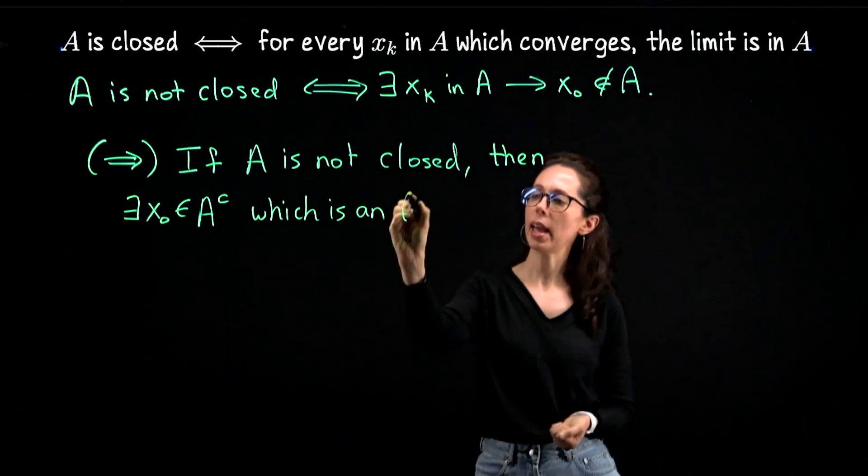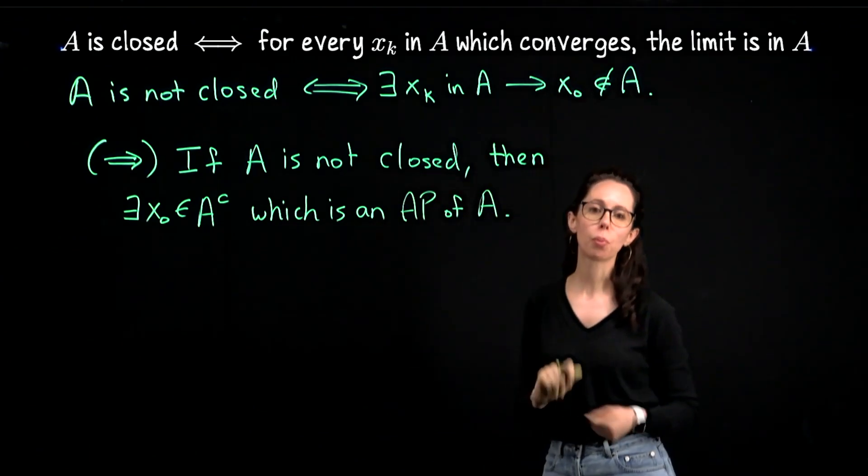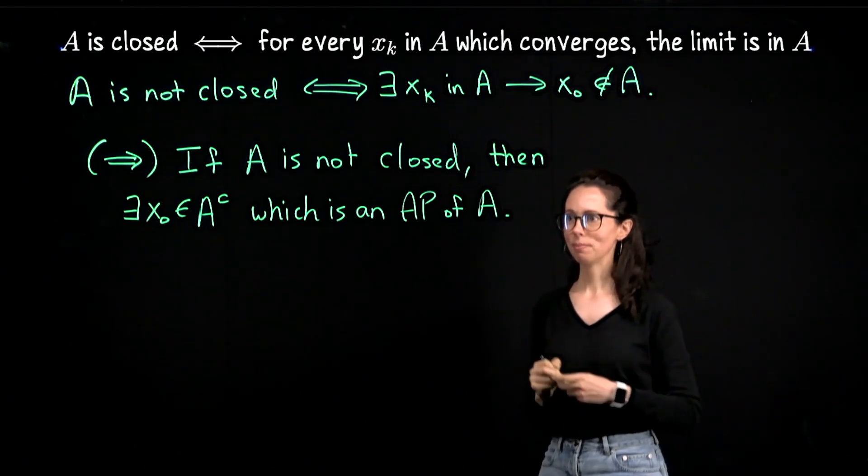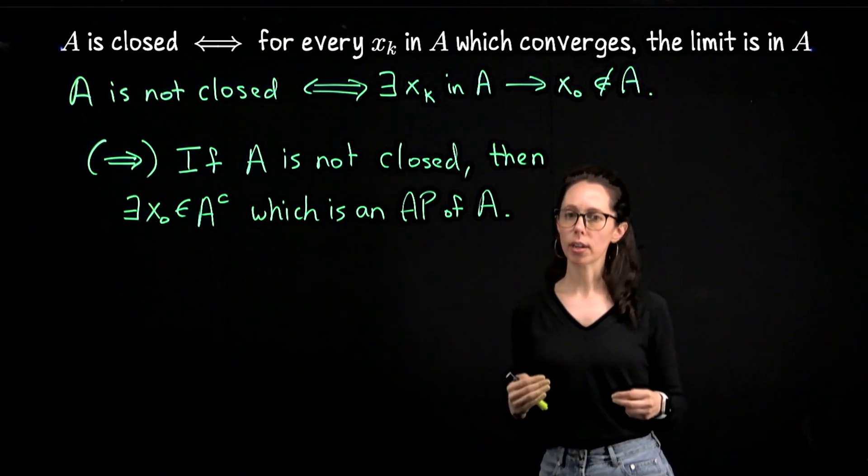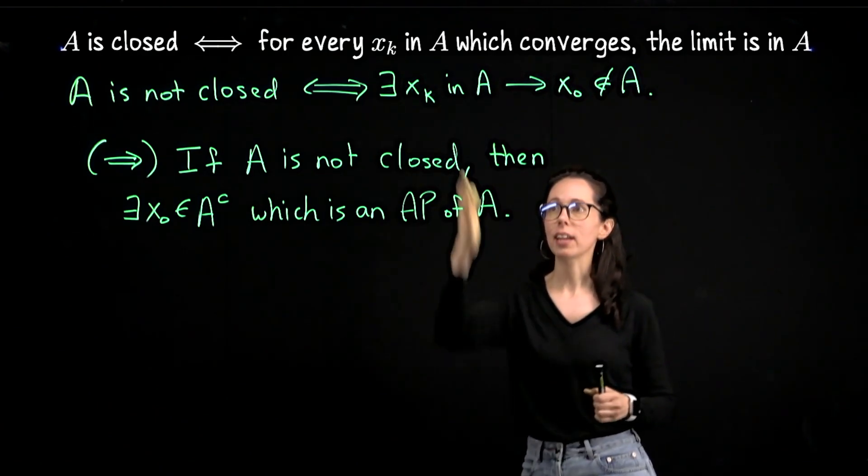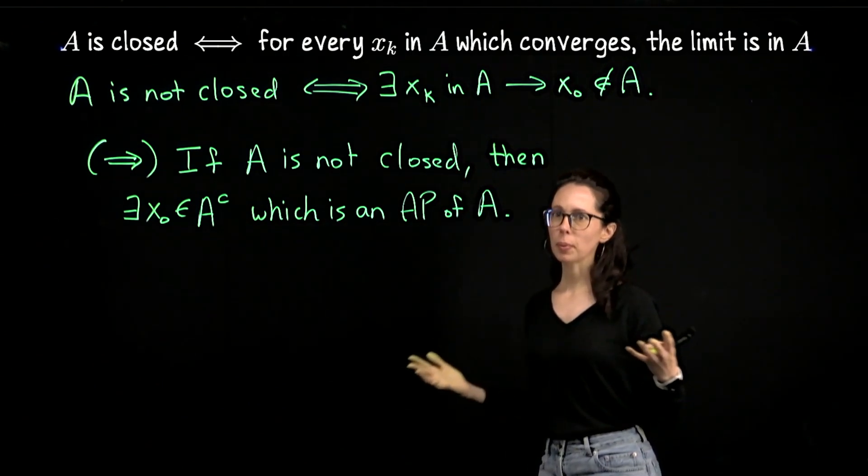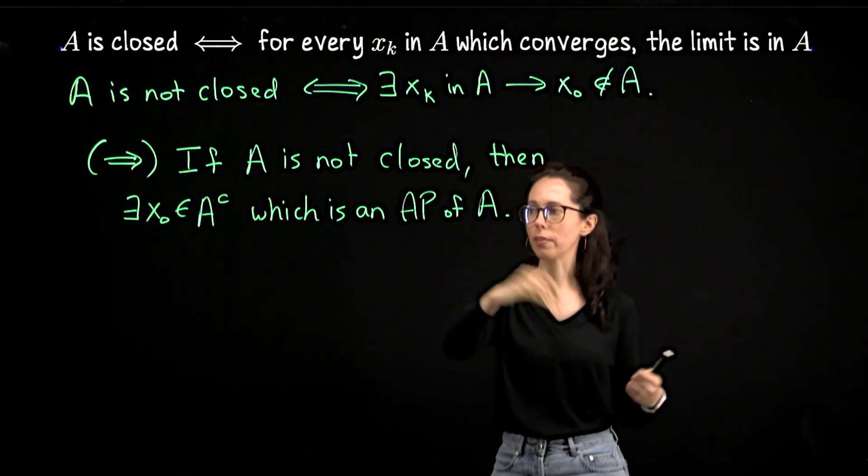Negating the idea that A is closed is simply saying that A is not closed. If A is not closed, then there exists x₀ in the complement of A which is an accumulation point of A. So I will write which is an AP of A to mean accumulation point or limit point. What I'm going to do now is manually construct a sequence which lives in A, but which converges to x₀ and that is the sequence that we're looking for.